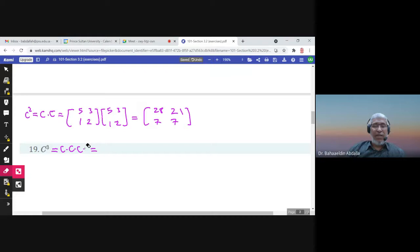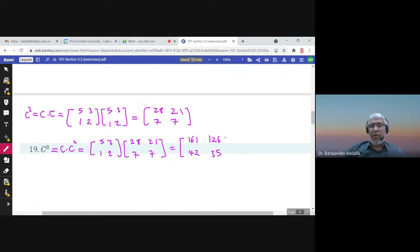So I can say that C cubed now is C times C squared. And I multiply C, which is 5, 1, 3, 2, times C squared, which is 28, 21, 7, 7. So 5 times 28 plus 3 times 7, that's 161. 5 times 21 plus 3 times 7, that's 126. 1 times 28 plus 2 times 7, that's 42. 1 times 21 plus 2 times 7, that's 35. So this is C cubed.